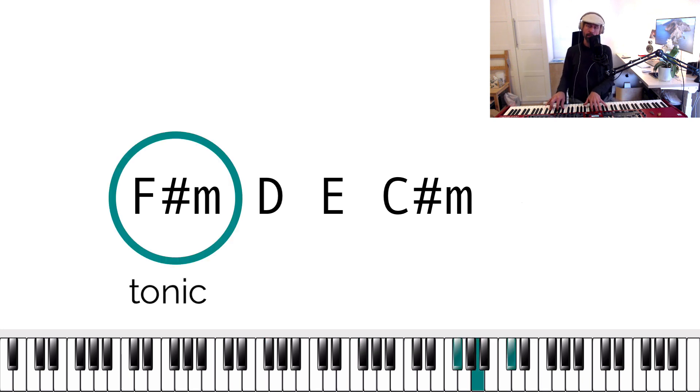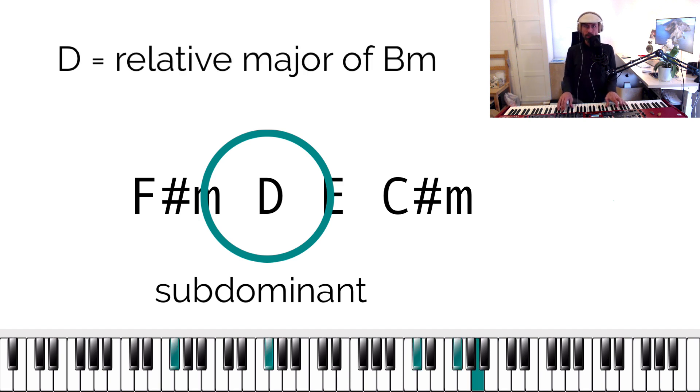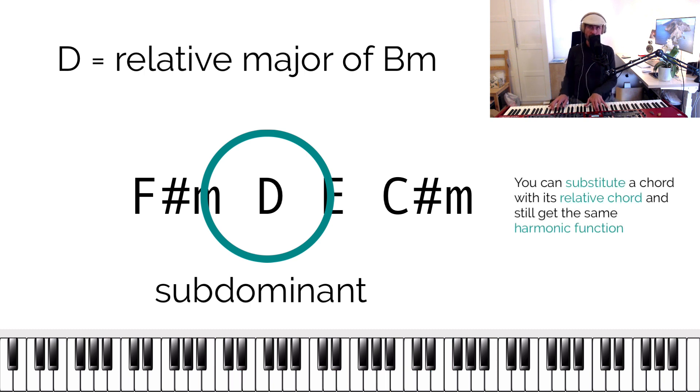So first one is the tonic, minor tonic. Then we have a kind of subdominant because this is the relative major of the minor subdominant. So in F sharp minor, the subdominant would usually be B minor. And the relative minor of B minor is just a minor third up, which is D major. So that's what we're using here. So essentially from a functional harmony point of view, this is tonic to subdominant.